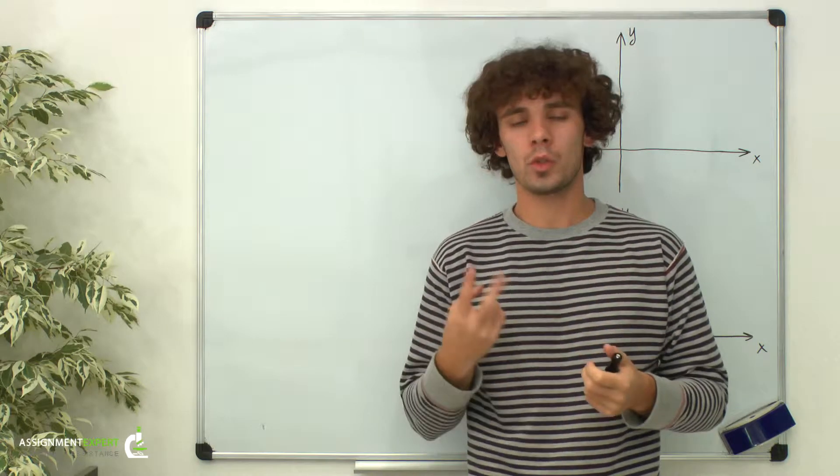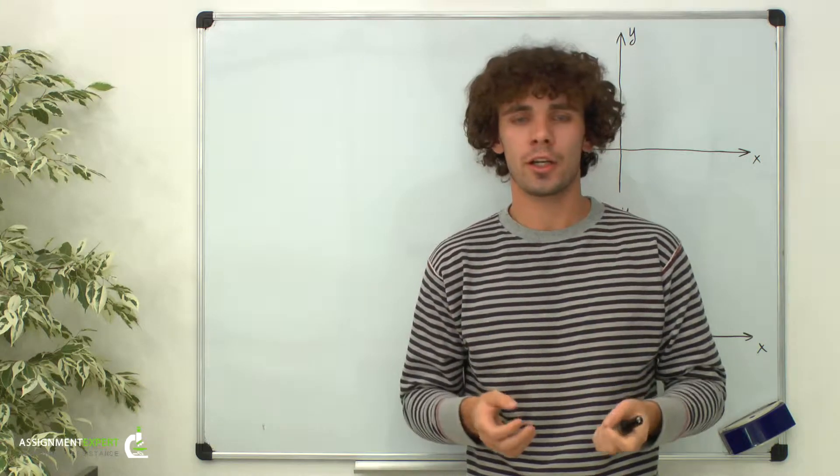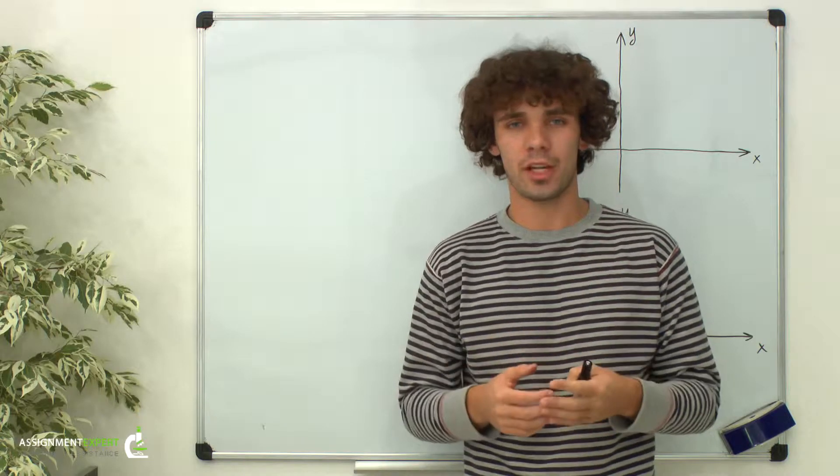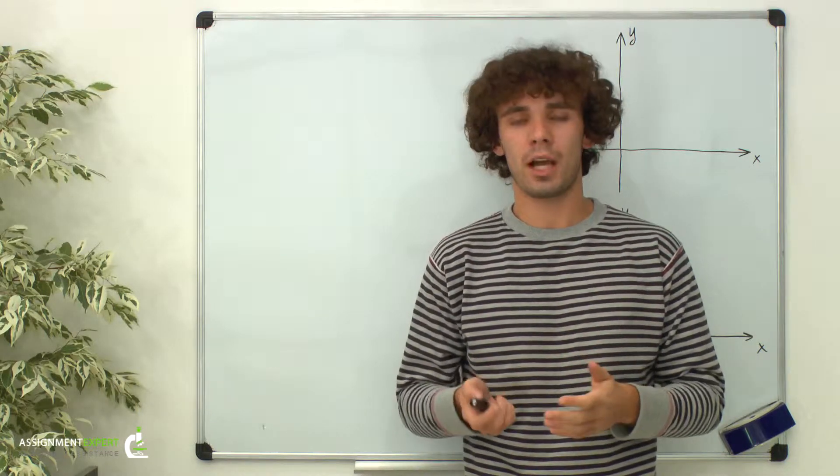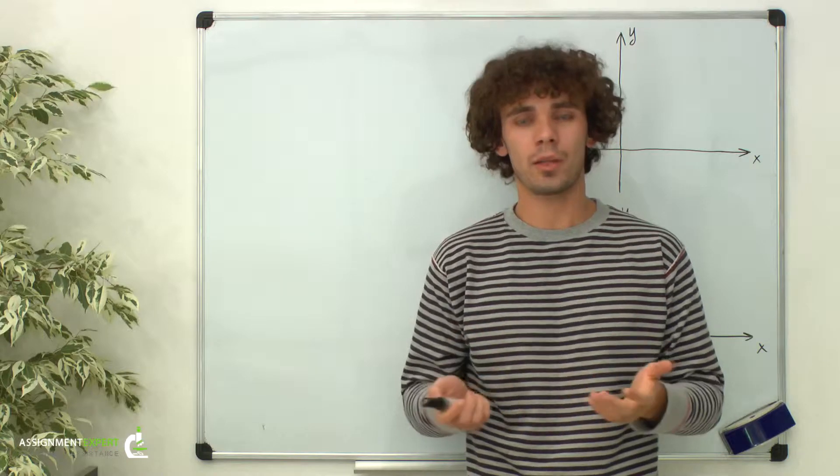Hello guys! As we all know, two lines on a plane can be perpendicular, which means the angle between them is right. Suppose we need to find the slope of the line perpendicular to the given. How can we do it?